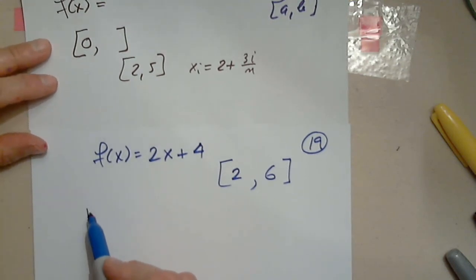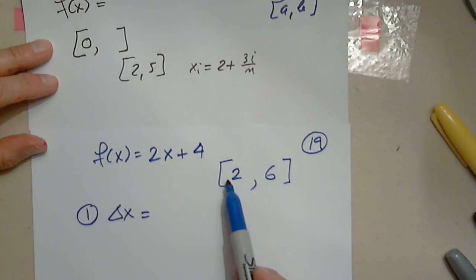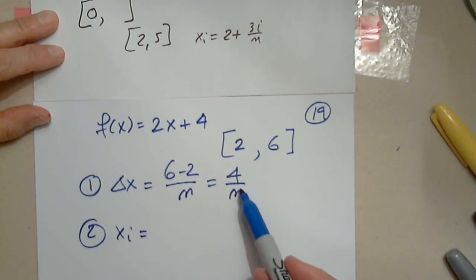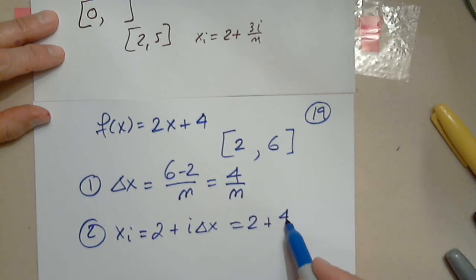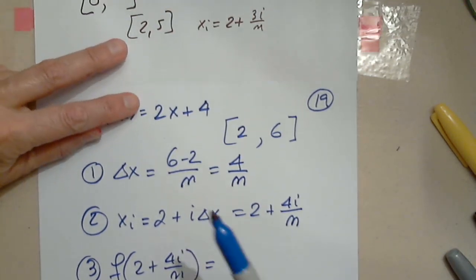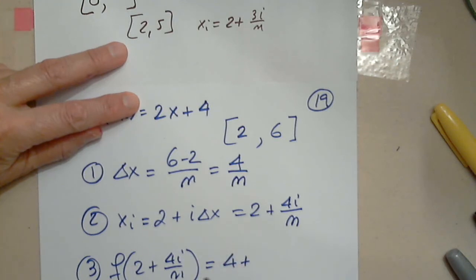So remember, we need three preps. The first prep is delta x: 6 minus 2 over n, so this is 4 over n. Well, but x_i would not be 0 plus i delta x, it would be 2 plus i delta x, which is 2 plus 4i over n. But since the function is not a difficult function, it's just linear, I have 2 times 2 is 4 plus 2 times 4 is 8i over n plus 4. I just plugged it in the function, I multiplied this by 2. And then it's 8i over n plus 8.